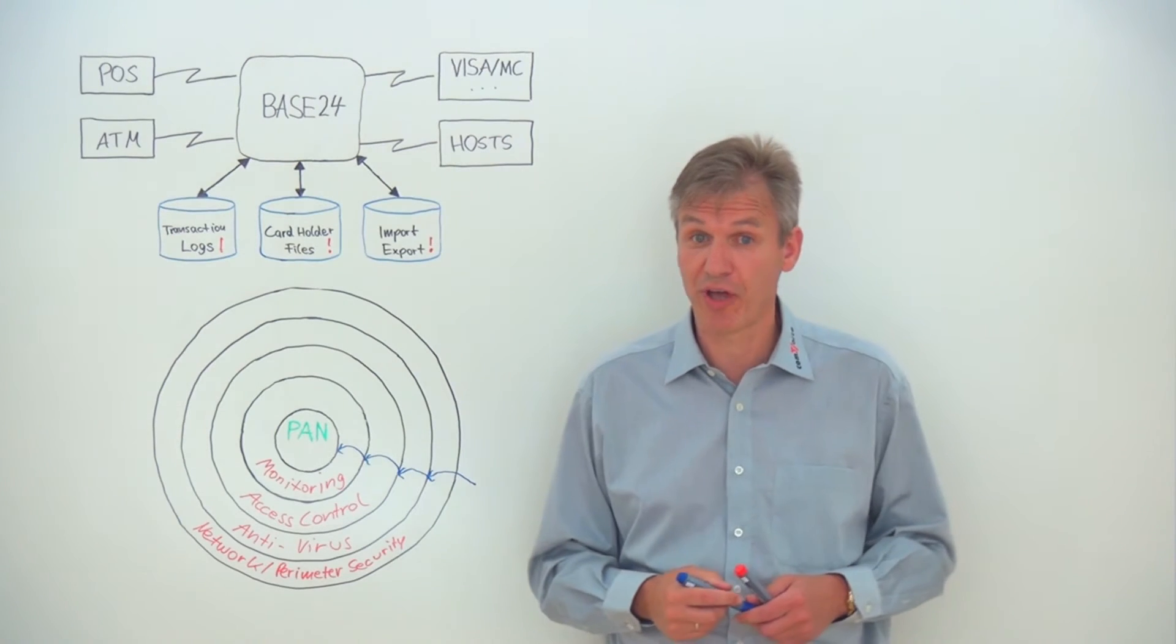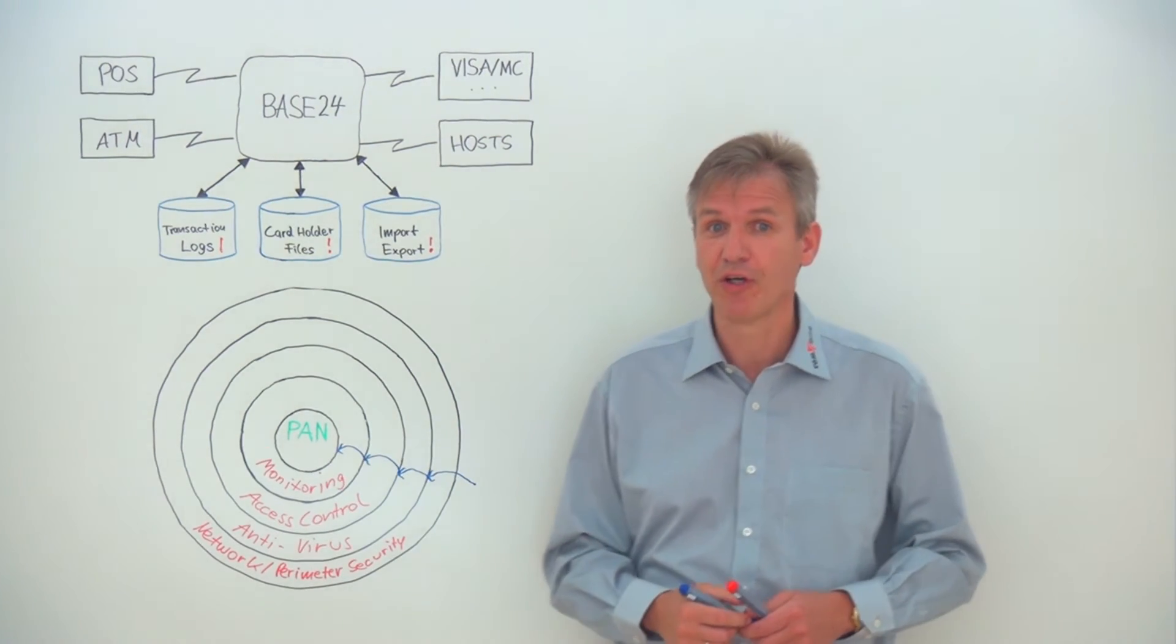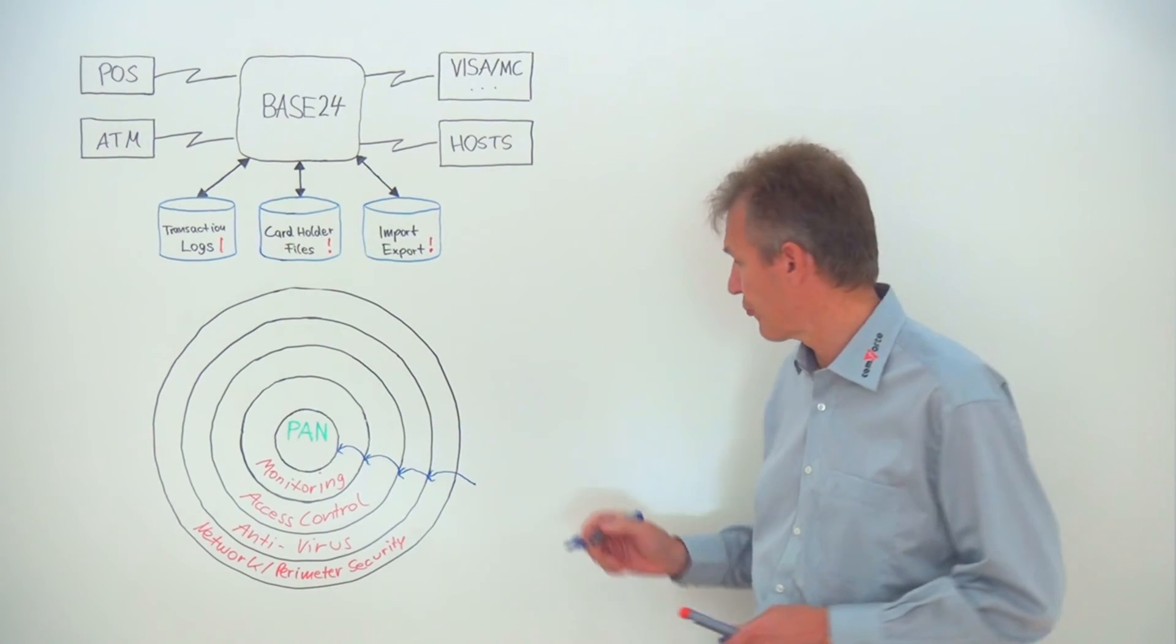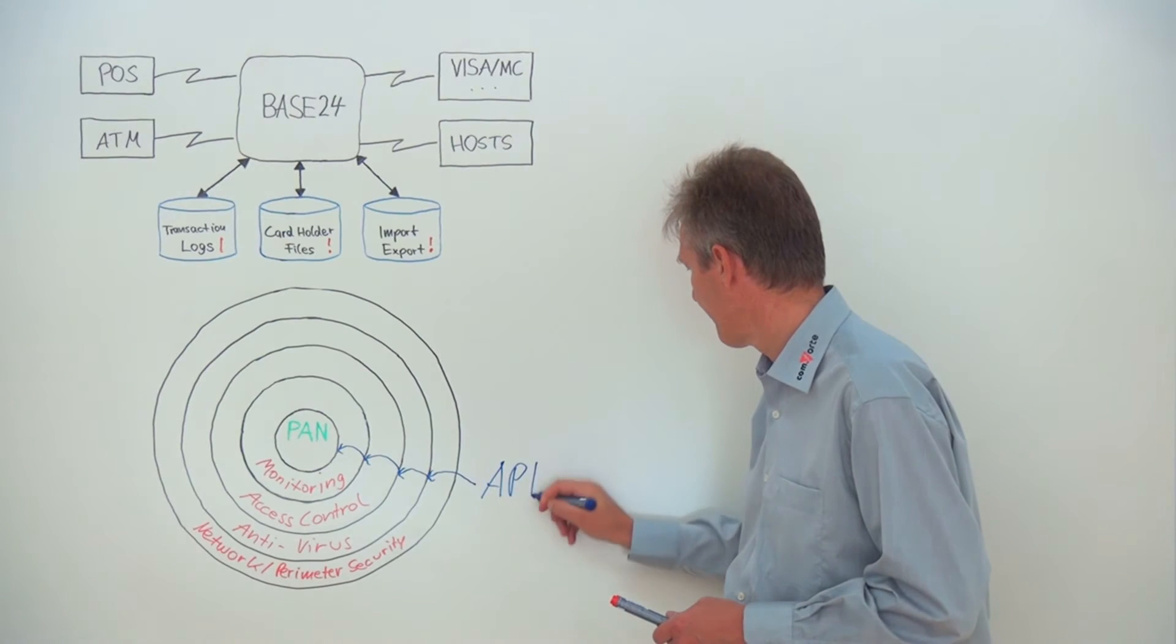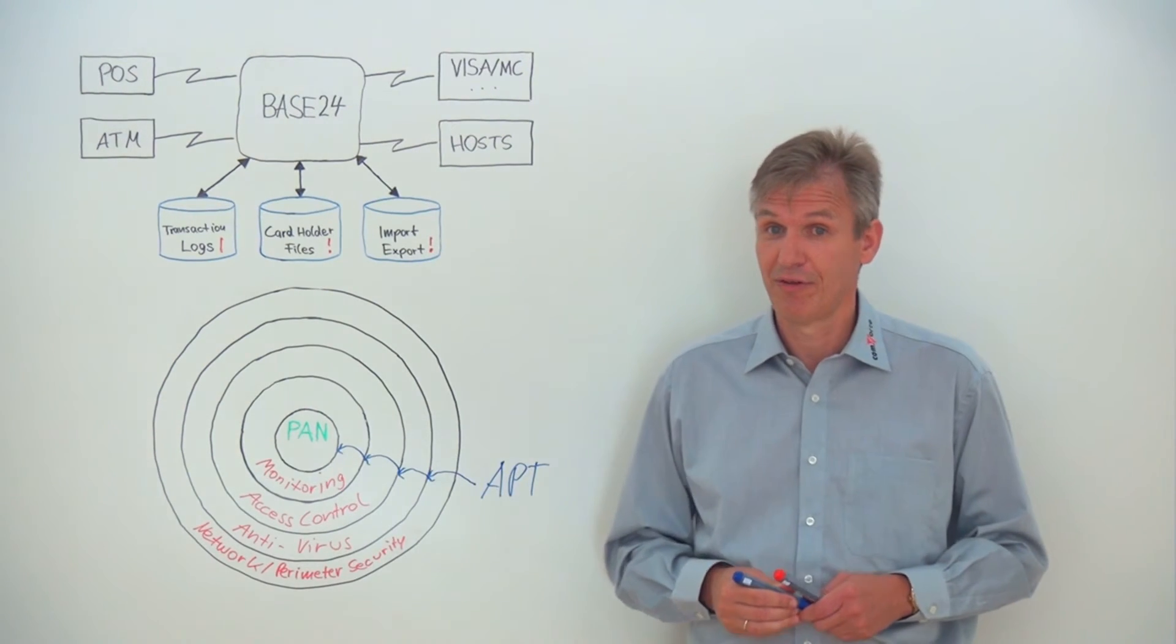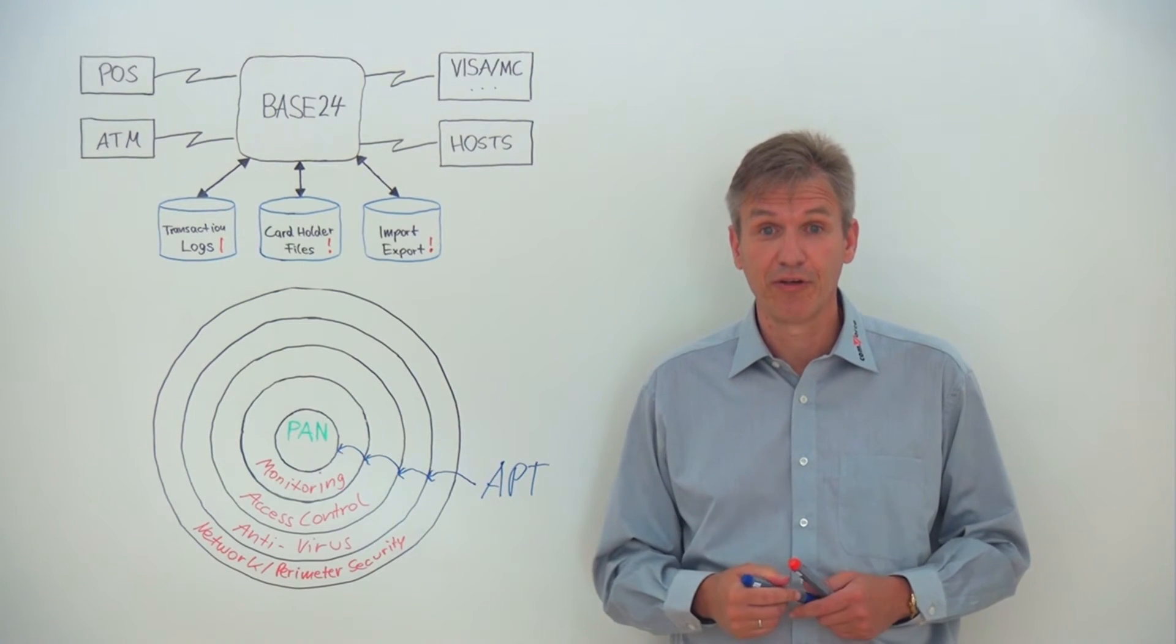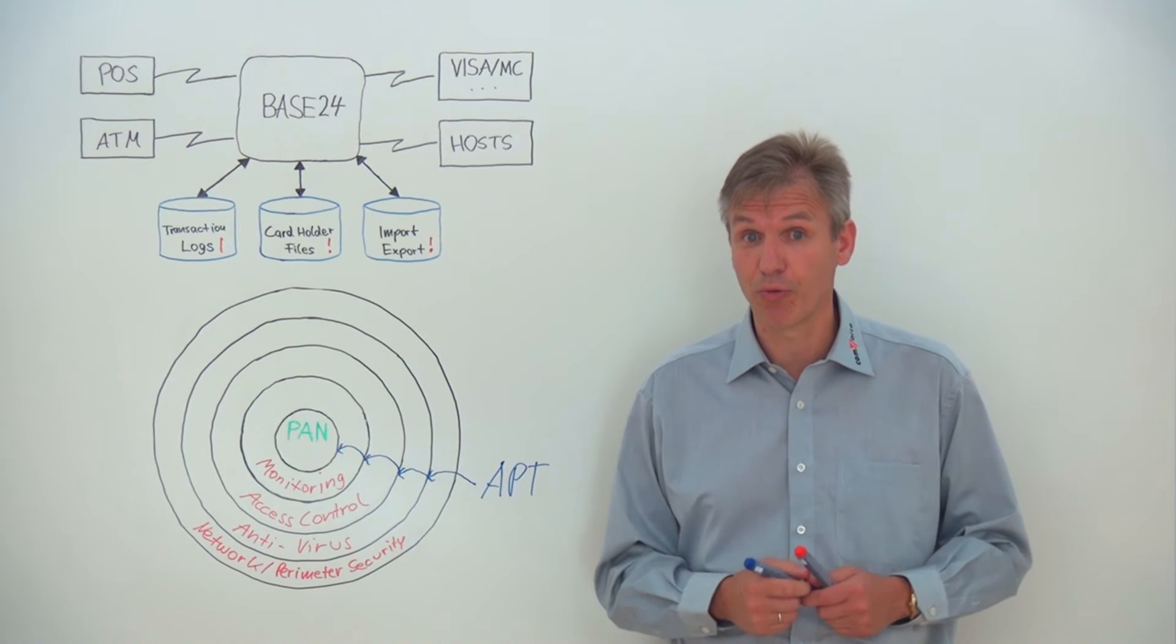Recent data breaches have shown that this is possible using so-called advanced persistent threats. These attacks are real. They are very sophisticated. They find the data. They get around the walls. They get through the walls.